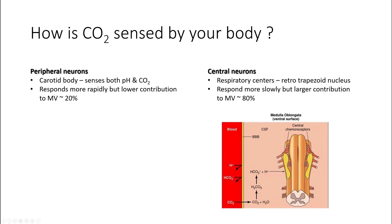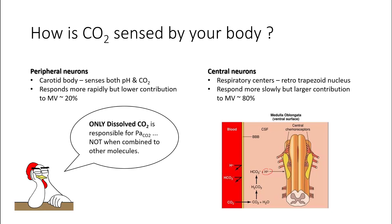The central neurons are present in the retrotrapezoid nucleus in the brainstem. Carbon dioxide has to cross through the blood-brain barrier to reach the CSF, where it's converted into bicarbonate and hydrogen ions, and this is sensed by the neurons. One important point is that only dissolved carbon dioxide is responsible for the partial pressures of carbon dioxide. When carbon dioxide is combined to other molecules, it does not contribute to the partial pressures.